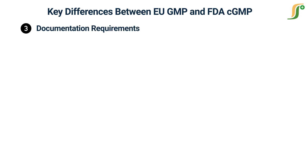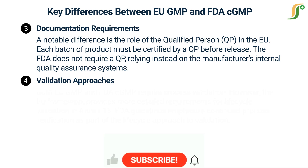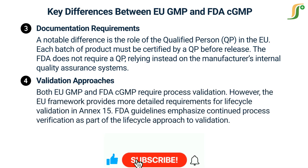A notable difference in documentation requirements is the role of the Qualified Person (QP) in the EU. Each batch of product must be certified by a QP before release. The FDA does not require a QP, relying instead on the manufacturer's internal quality assurance systems.